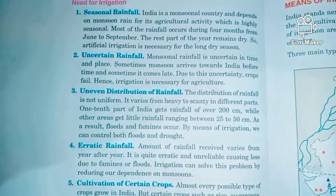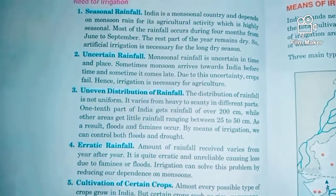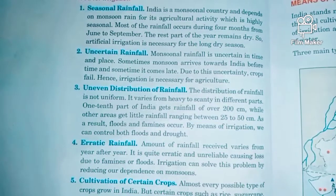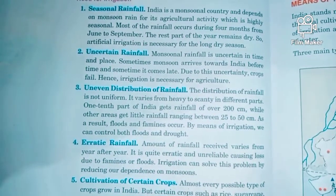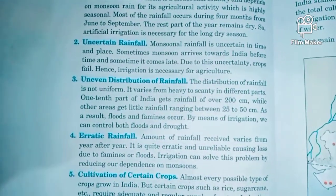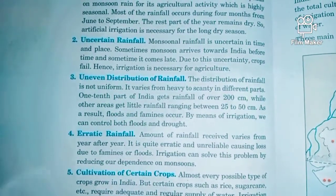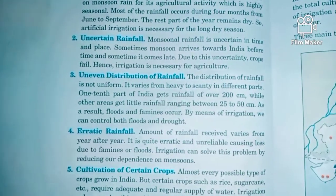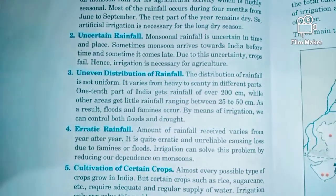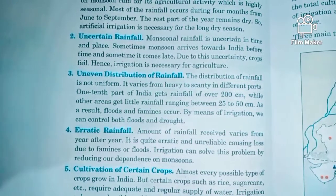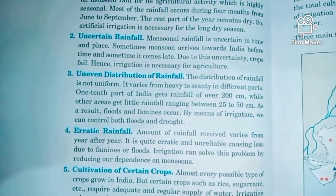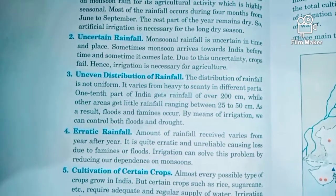The next reason is uneven distribution of rainfall. Though rainfall comes from June to September, it does not fall evenly across the country. Some areas receive 200 centimeters or more, while some areas receive only 25 to 50 centimeters. This creates floods in places like Assam and very scanty, drought-like situations in places like Rajasthan. In order to address this, we need irrigation facilities.